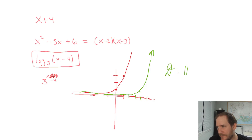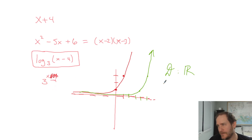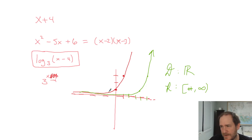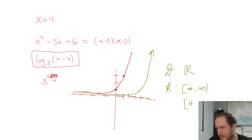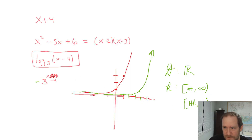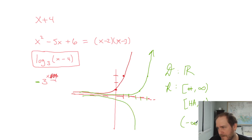You would know the domain is all reals because the domain of every exponential function is all reals. The range is going to be from some number up to infinity — always the numbers above the horizontal asymptote, so range is the horizontal asymptote up to infinity. Though if there's a negative in front, the graph reflects over the horizontal asymptote, and then the range would be negative infinity up to the horizontal asymptote.